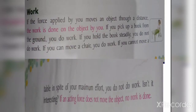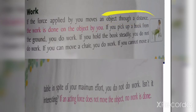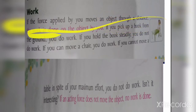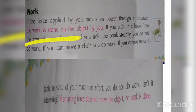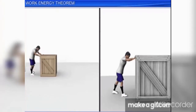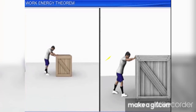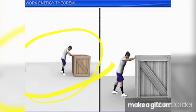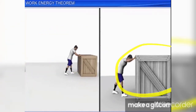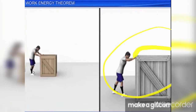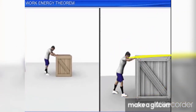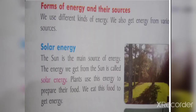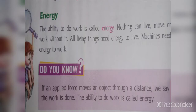Work done: if force is applied by you to an object through a distance, work is done. If we are applying force on an object and it is moving, work is done. If the object is not moving, work is not done. In this image, work is done because the object can move. But here, force is applied but the object is not moving, so work is not done.